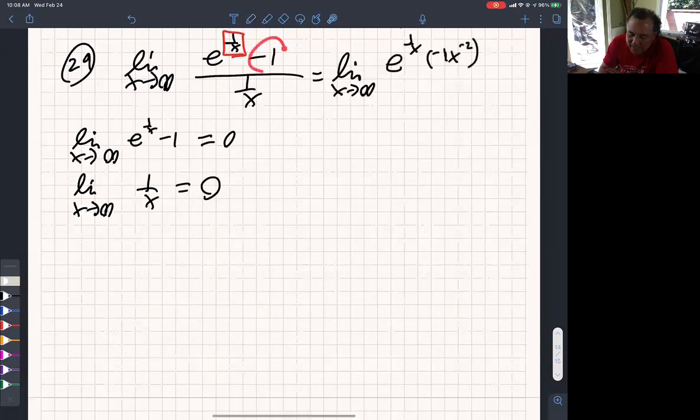The derivative of that is 0. And the derivative of that is the same thing, negative 1 x to the negative 2. And beautifully, those cancel.